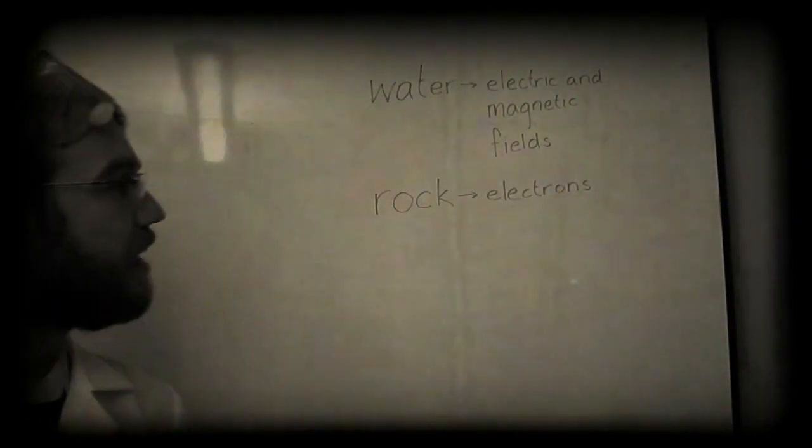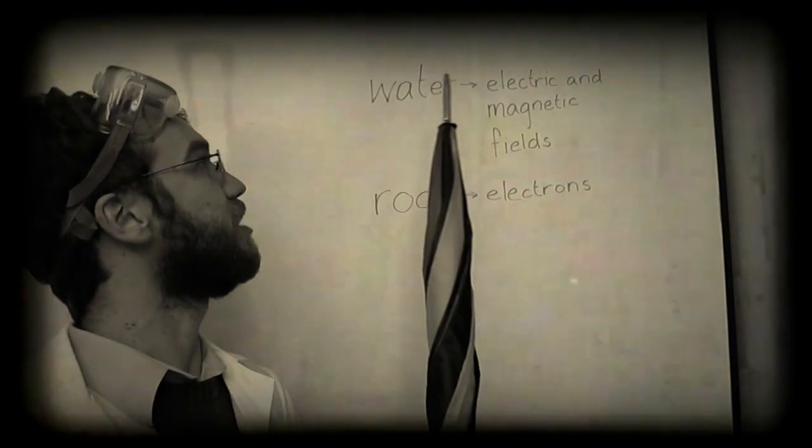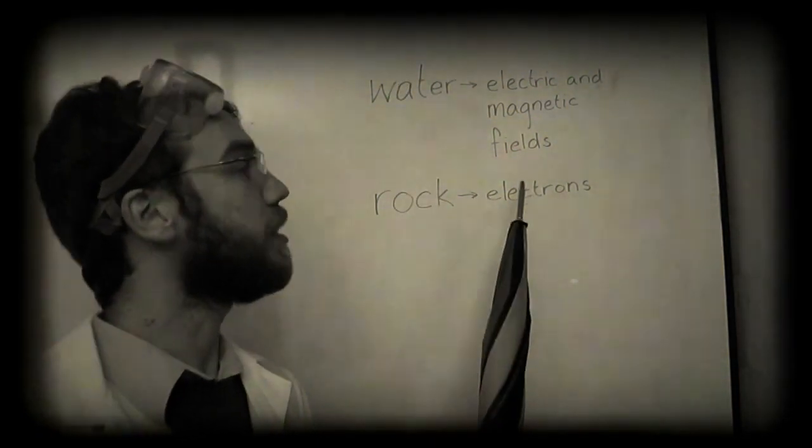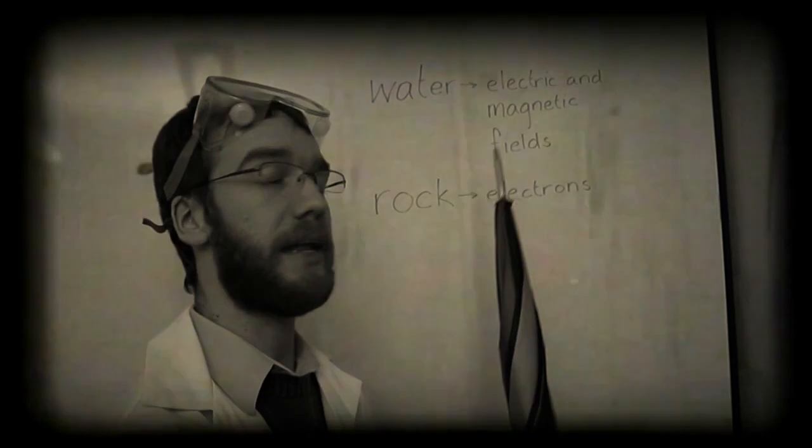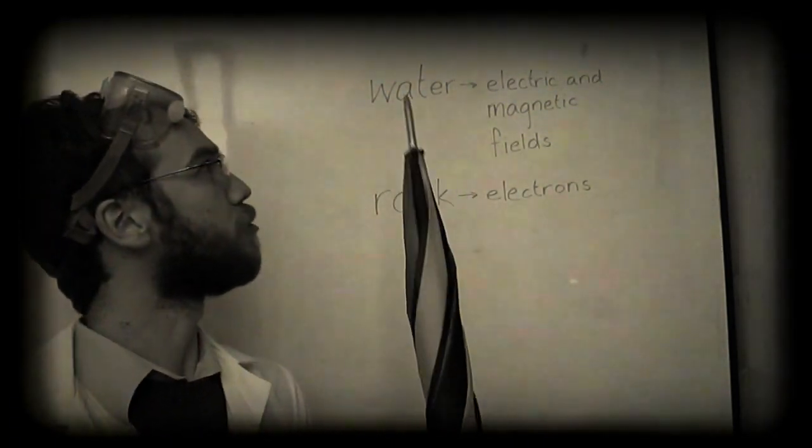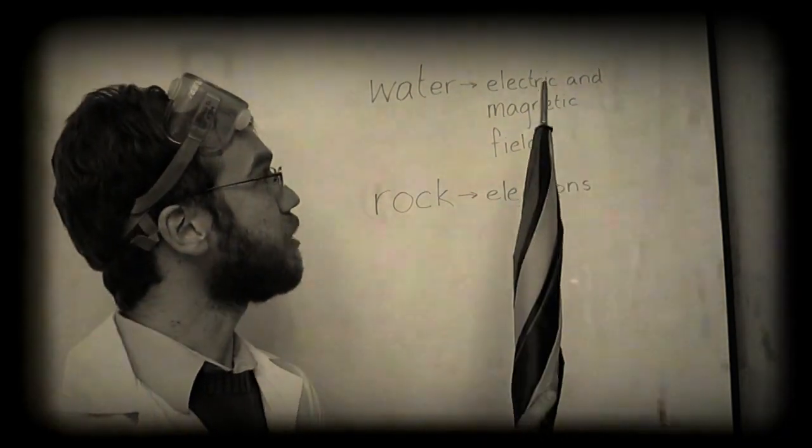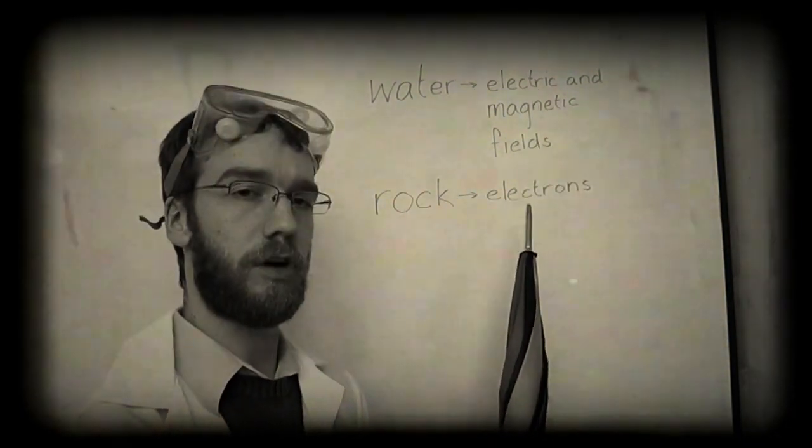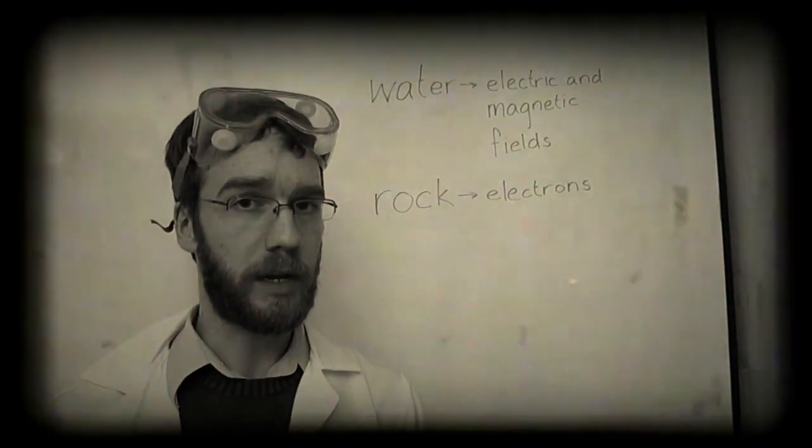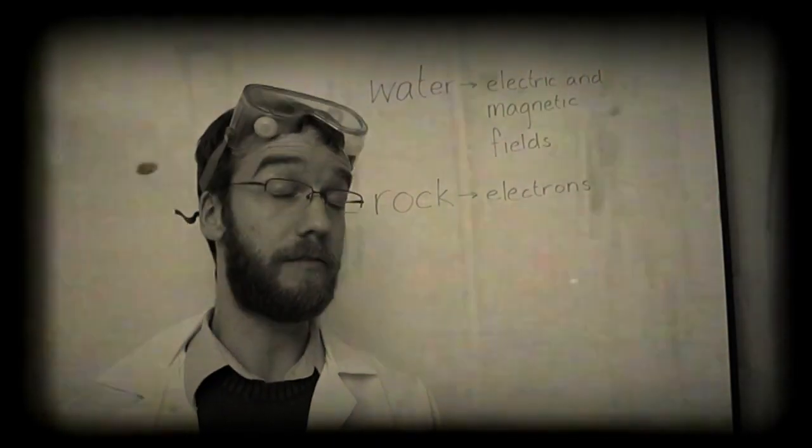In cell phones, instead of rocks forming ripples in the pond water, moving electrons form waves in the electric and magnetic fields. Now unlike the ripples in the water, which oscillate very slowly, the electric and magnetic fields and the electrons oscillate very quickly, billions of times every second.